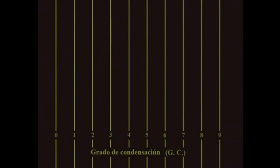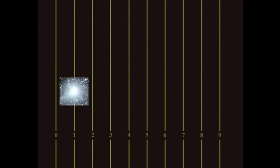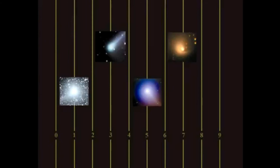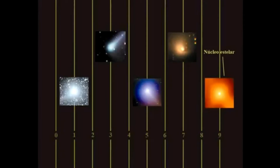El grado de condensación del núcleo tiene una escala de valores que va desde el cero hasta el nueve. Los valores iniciales cercanos al cero representan núcleos completamente borrosos. A medida que vamos avanzando en esta escala de valores, vamos viendo núcleos de un moderado grado de condensación. Finalmente, el número nueve representa a un núcleo con características estelares. A la hora de estudiar un cometa, debemos asignarle un valor dentro de este rango a su núcleo.